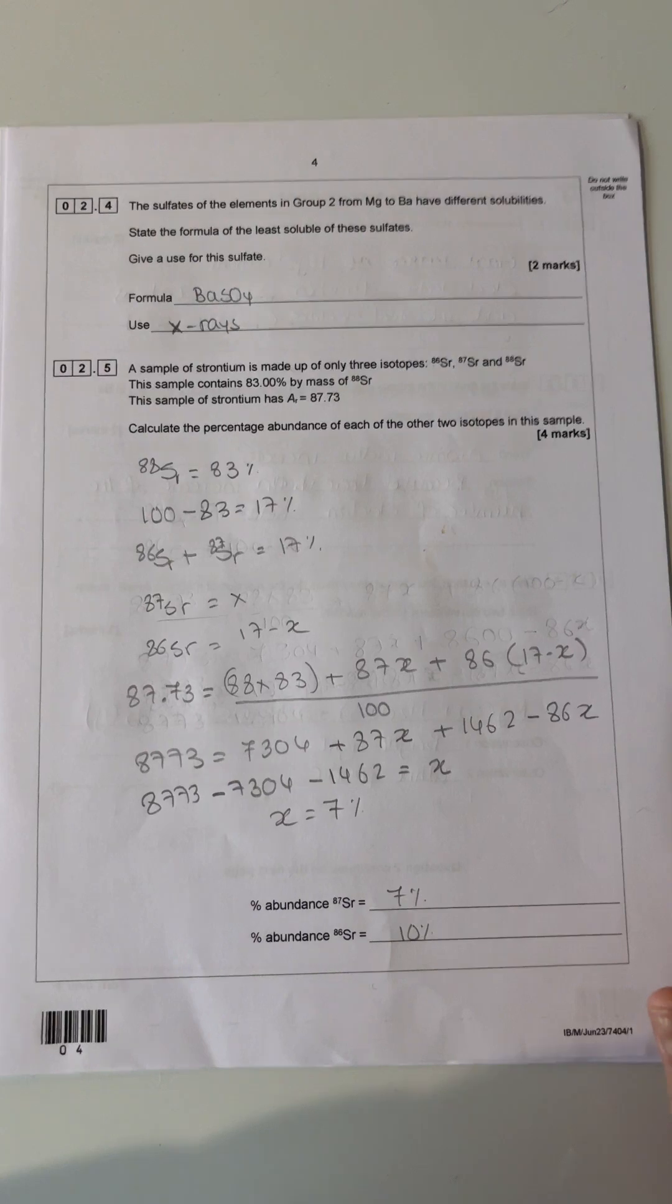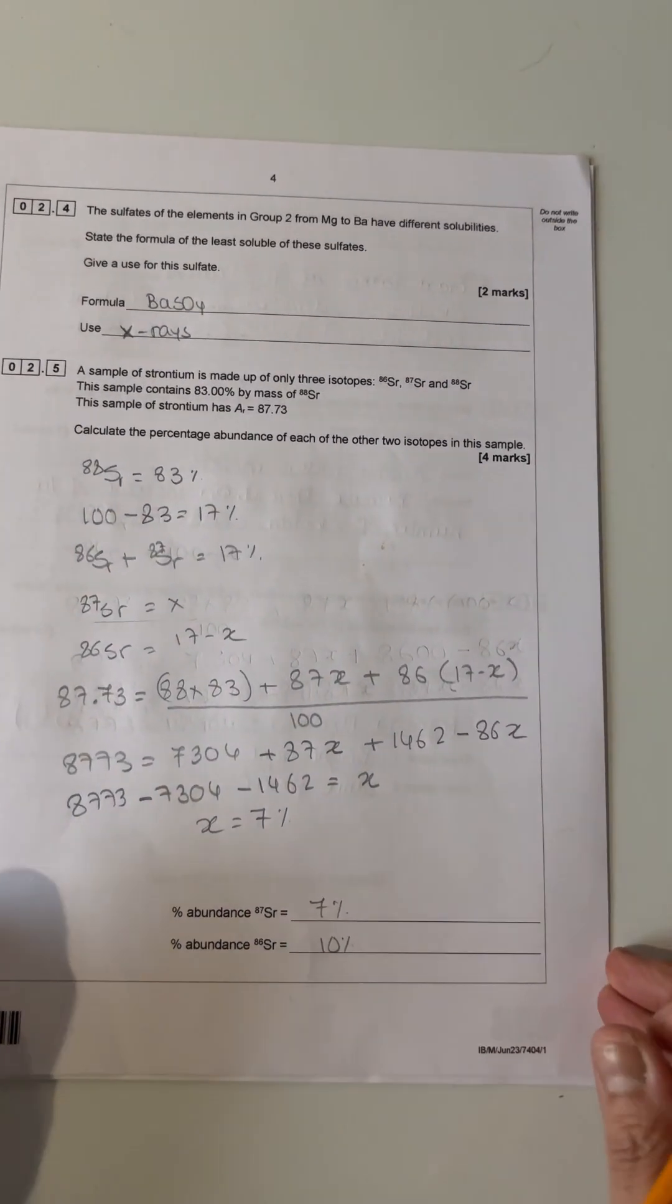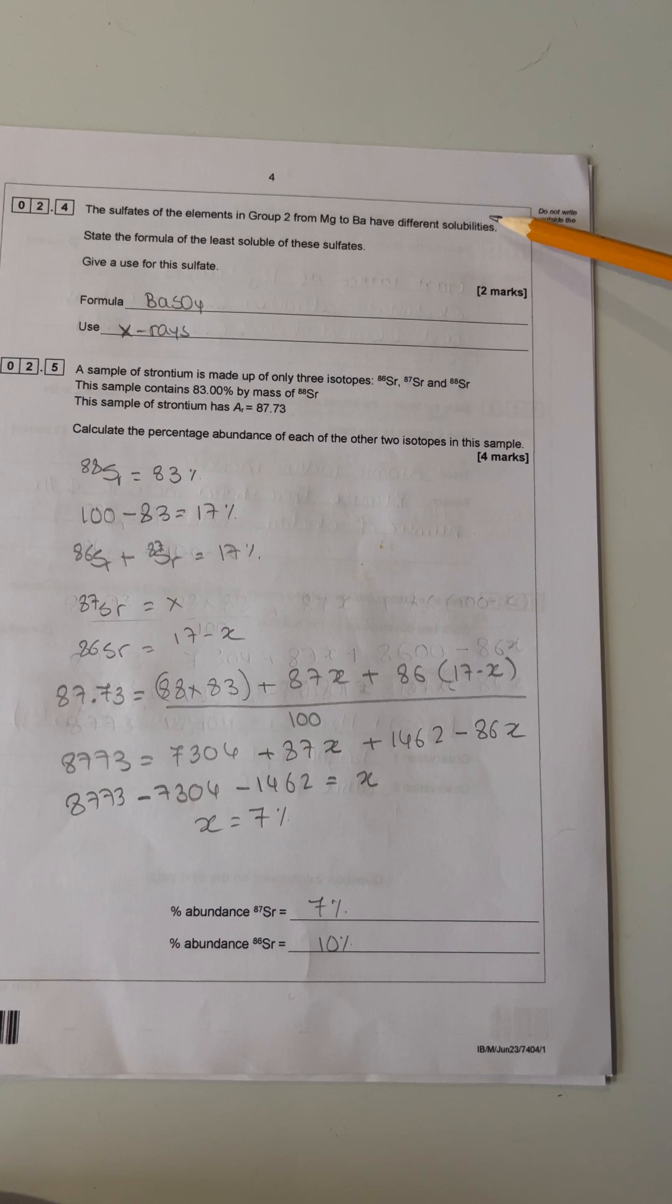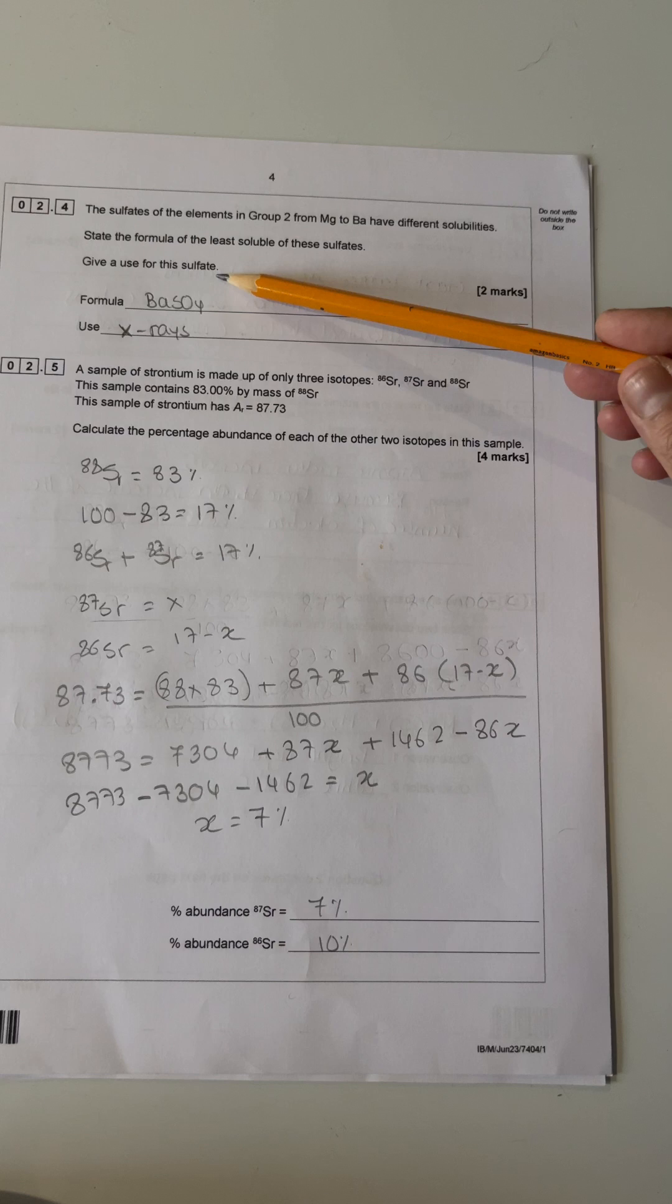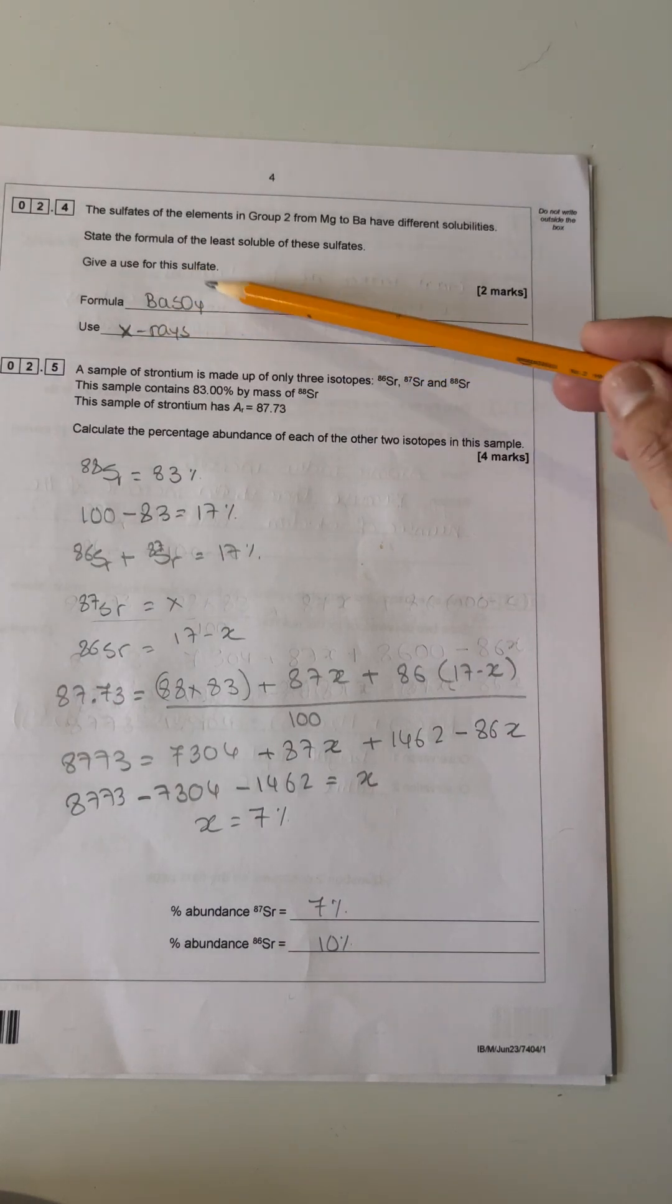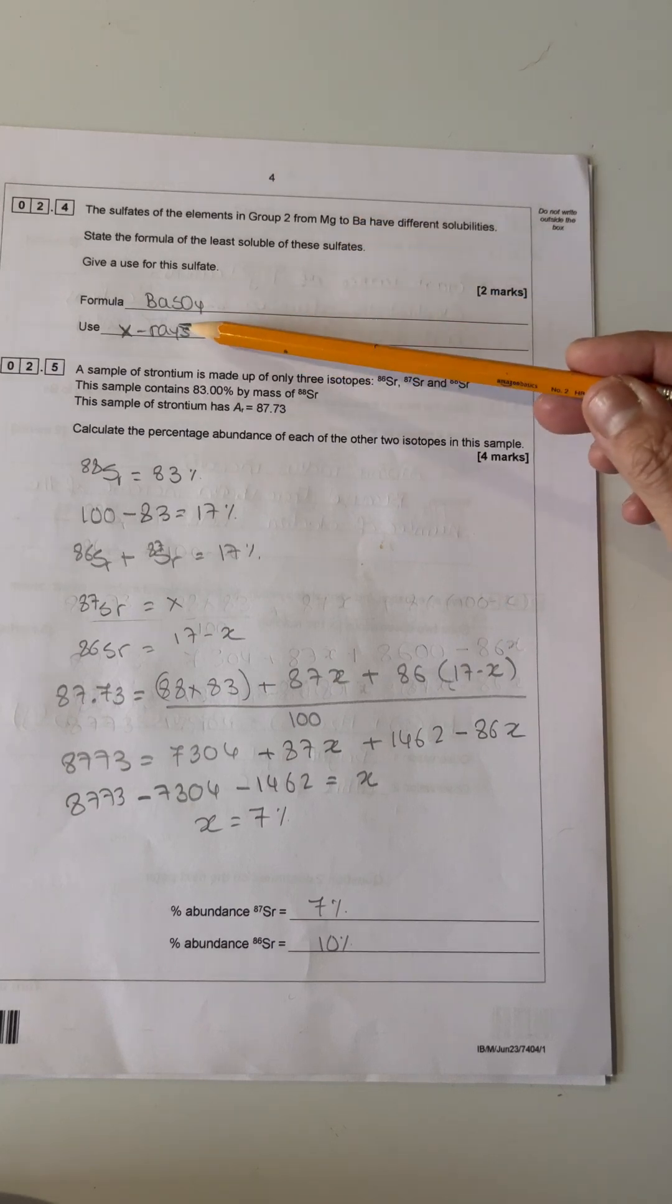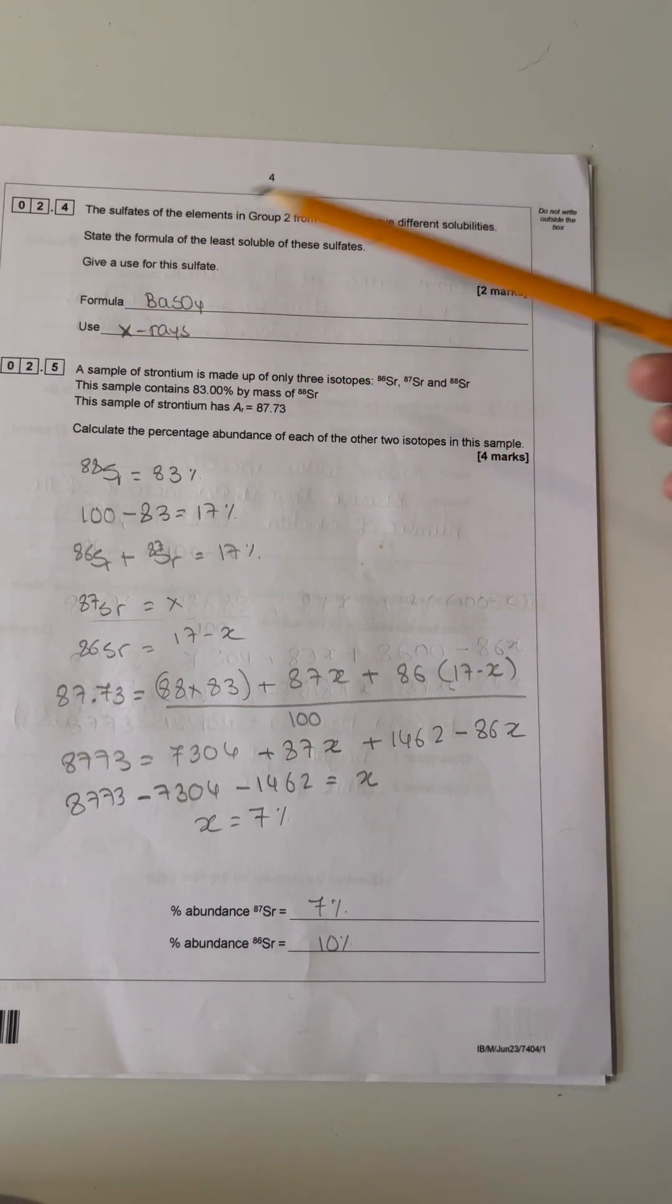Let's look at 2.4. The sulfates of elements in group two from magnesium to barium have different solubilities. State the formula of the least soluble of these sulfates. The least soluble is barium sulfate. As you go down the group, barium becomes less soluble, and this is used in x-rays over the bones and the body.